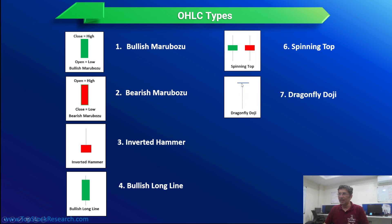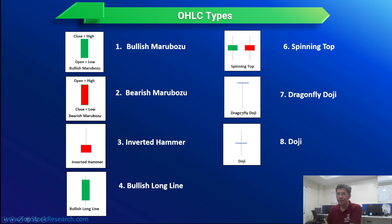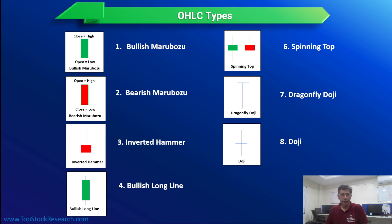The doji is where the market starts and ends at the same point — open equals close. One doji variation shows the price going very deep to a low level and coming back; during trading, bears were in control but bulls pulled it back, giving bulls a slight edge. In the second doji variation, neither bulls nor bears have any edge — it's clearly indecisive. You cannot tell just by looking at the OHLC whether it's bullish or bearish. This is similar to a spinning top but is another variation.